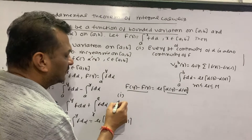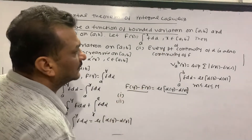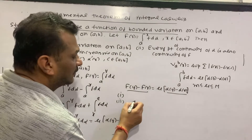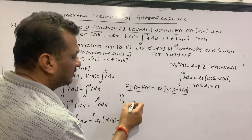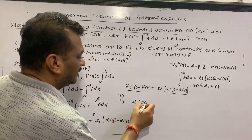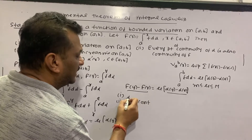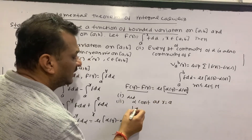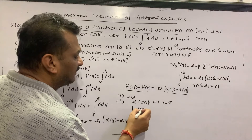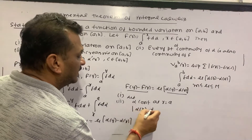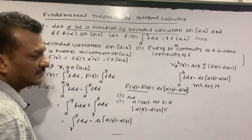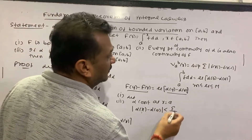Second point: F is continuous at every point where alpha is continuous. Suppose alpha is continuous at a point x equal to x₀. Then we write: |α(x) minus α(a)| is less than epsilon over some bound, establishing the required estimate for continuity of F.